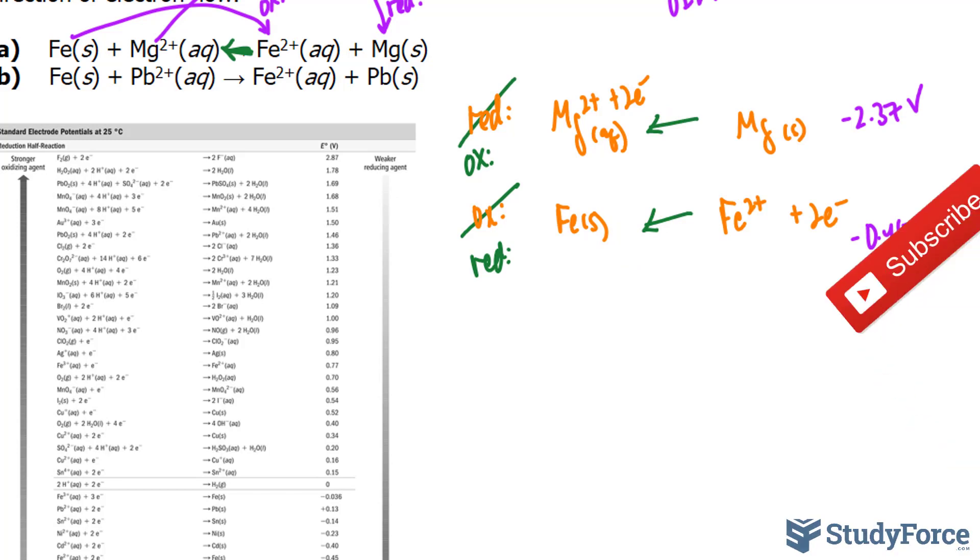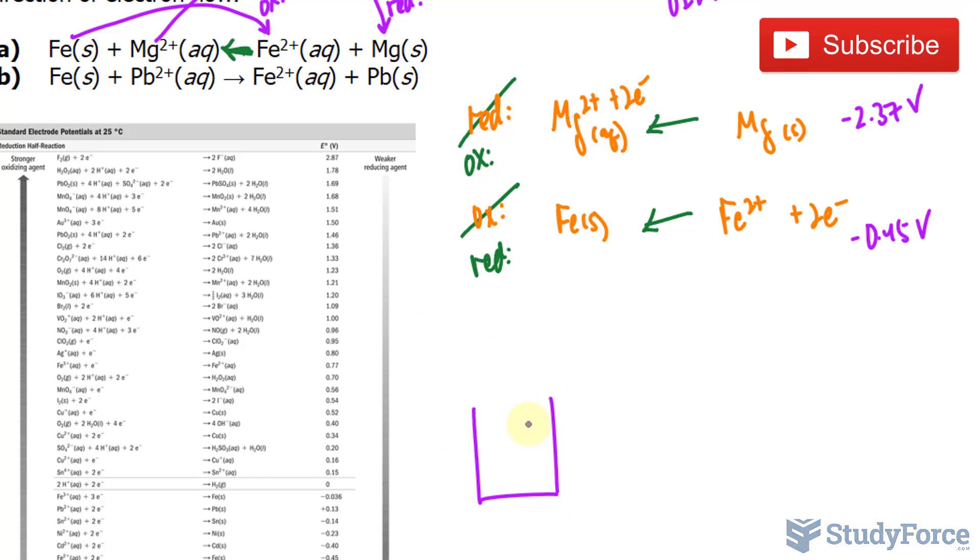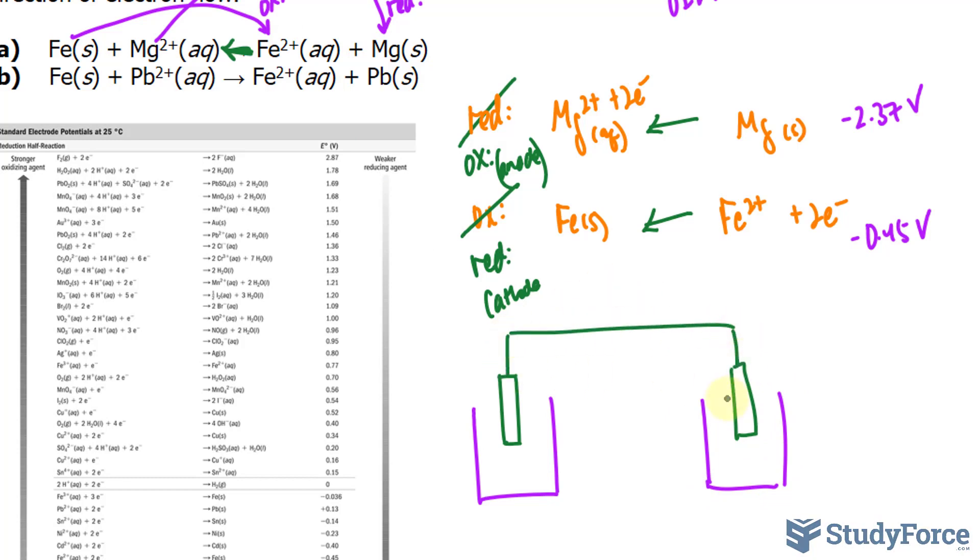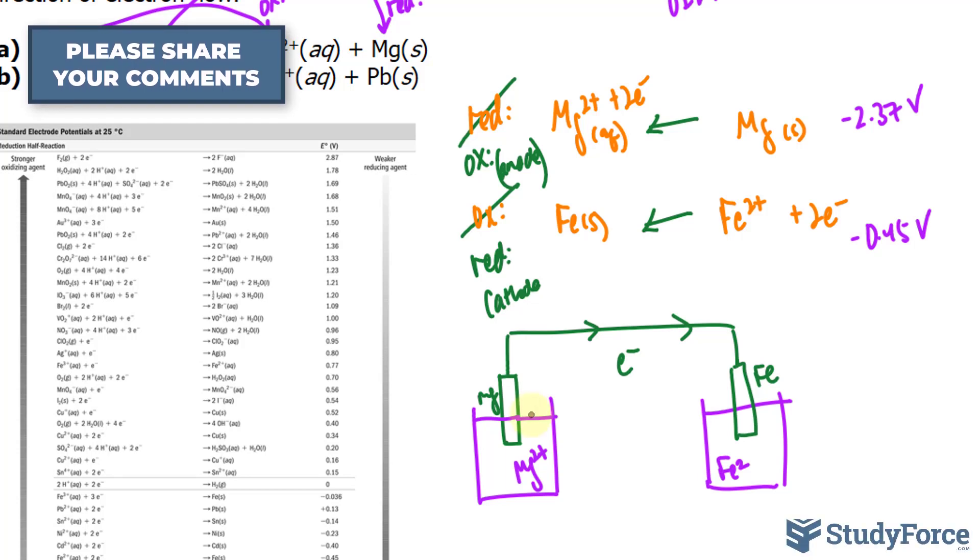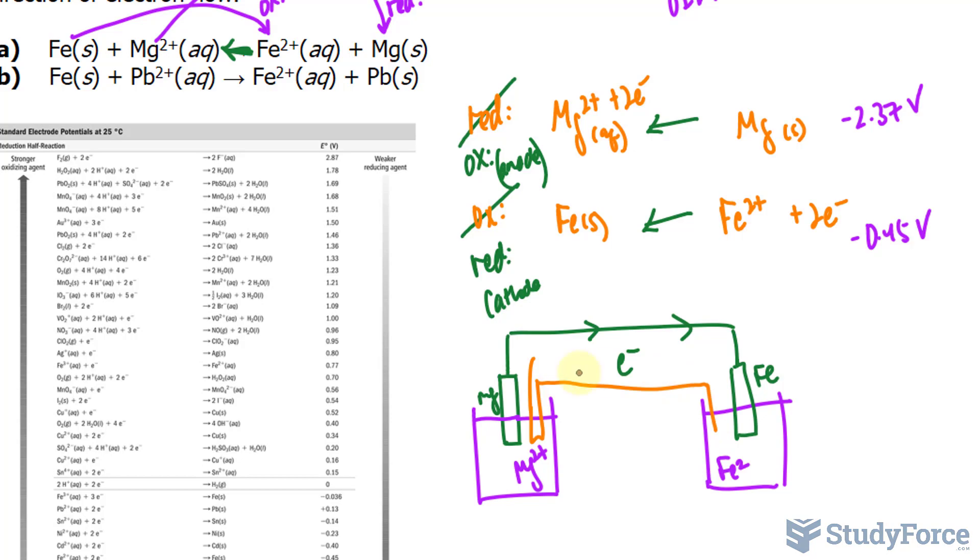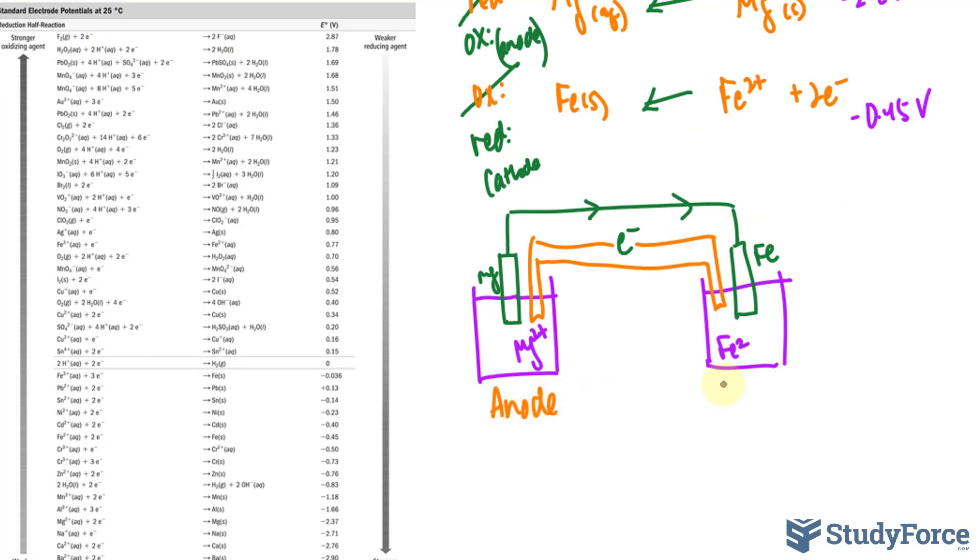At this point, we can now draw our electrochemical cell. The anode should be on the left side. The oxidation is always the anode. So I'll write down anode, and this is the cathode at the reduction end. So we have solid magnesium on one side, and over here we have solid iron. The electrons will flow from the anode to the cathode. It is being bathed in magnesium 2+, and this one is being bathed in iron 2+. Of course we need to create a salt bridge, which connects the two cells.